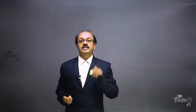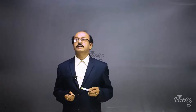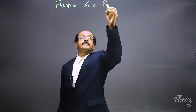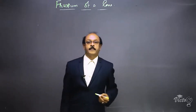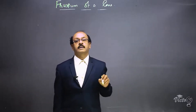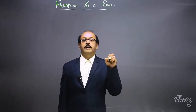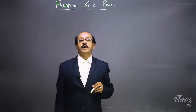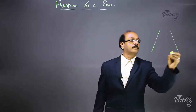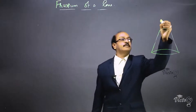The last topic of this chapter, surface areas and volumes, is frustum of a cone. A frustum is obtained when we remove a small conical part from the top of a larger cone. The remaining part is called the frustum of a cone. This is the shape of a frustum of a cone.